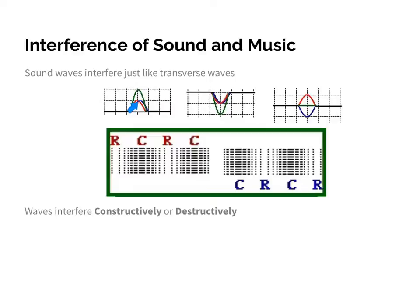For example, if both amplitudes are one, the resulting wave would have an amplitude of two. If they're both negative one, the resulting amplitude would be negative two. And here we have destructive interference — the second type — where a crest and a trough meet together, in opposite phase. Based on the superposition principle, a positive one amplitude and a negative one add to zero, so the amplitude gets smaller.